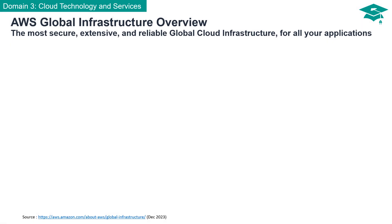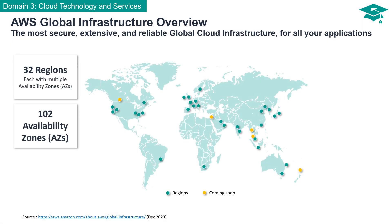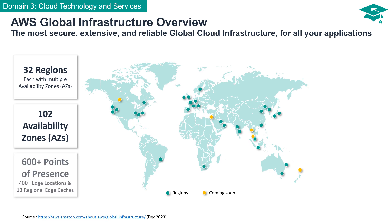The AWS cloud spans 102 availability zones within 32 geographic regions around the world, with announced plans for 15 more availability zones and 5 more AWS regions in Canada, Germany, Malaysia, New Zealand, and Thailand. AWS extends its reach with over 600 points of presence, more than 400 edge locations, and 13 regional edge caches strategically placed worldwide.